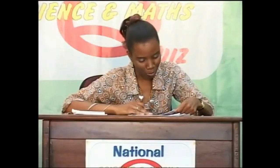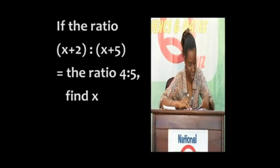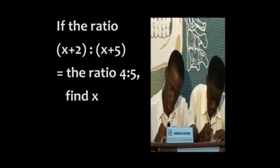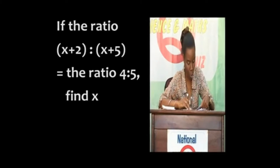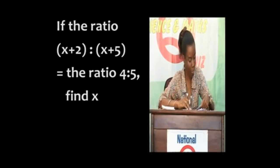At Achimota School, if the ratio X plus 2 is to X plus 5 is equal to the ratio 4 is to 5, please find X. Yes, Andreas. X is 10. That's right.